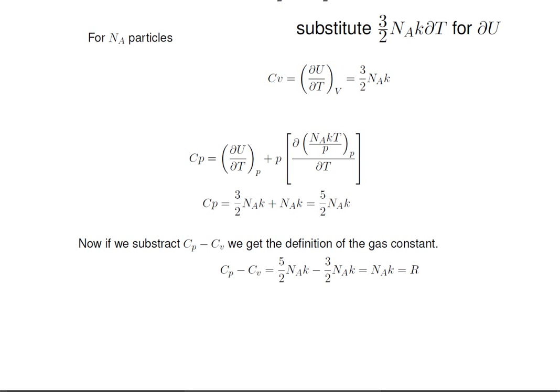Now if we subtract CP minus CV, we get the definition of the gas constant. CP minus CV is 5 halves nA times k minus 3 halves nA times k, which equals nA times k, which is Avogadro's number times the Boltzmann constant, which is the gas constant r. So now you've seen another way to derive CP minus CV. This one's quite a bit more sophisticated than the first.